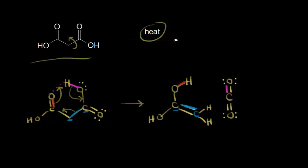So we've formed our CO2, and we've also formed an acid enol. This right here is called an acid enol. We saw in earlier videos how the enol is in equilibrium with the keto form — with keto-enol tautomerization. This is actually the enol form of acetic acid, and so that's going to be our product.